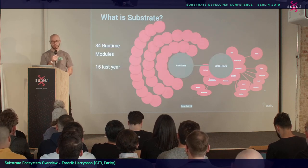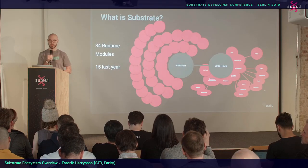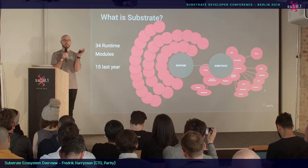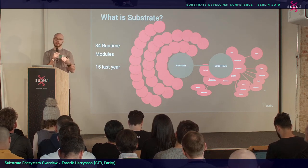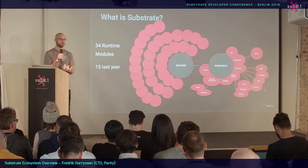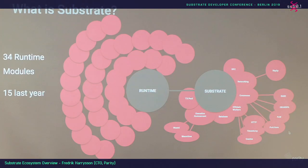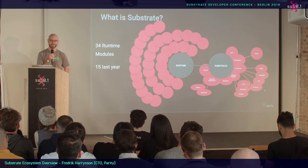Both for Polkadot and for what the community is asking for, we've added more and more runtime modules. Last year at SubZero we had about 15 runtime modules; today we have about 34. These are pieces of logic, pieces of code that compose reasonably well together, which you can use to build your own chain just by picking the ones you want — or you can use them as reference. We now have a massive amount of reference code to look at if you want to build a module yourself.